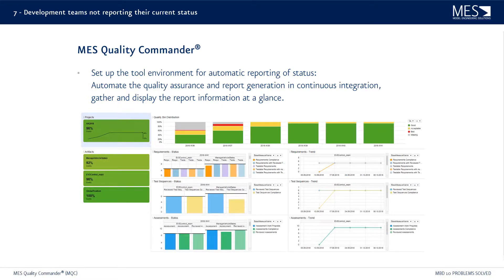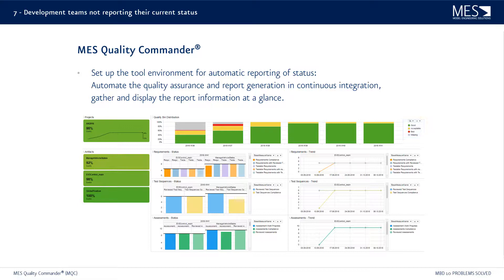You can automate the quality assurance and report generation, and gather and display the report information at a glance in the MES Quality Commander. A typical page shows your project overview and your artifacts — the different models in your project. You can also see the development of your project over time in terms of quality: good, acceptable, and bad. For a specific quality assurance measure such as testing, you can see the detailed tool-specific data as well. These tool pages are available for all typical quality assurance tools of the software development cycle.